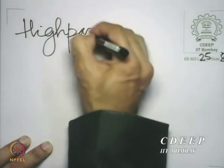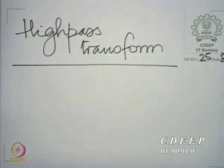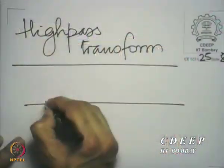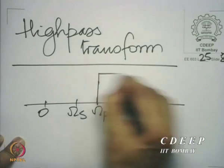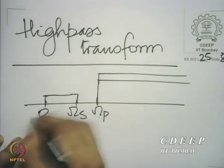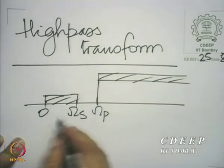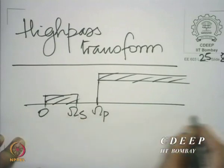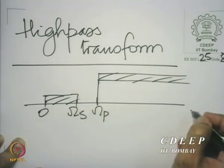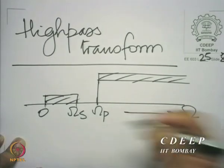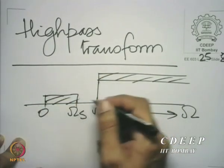High pass transformation. In a high pass filter, what we wish is that as the frequency increases, we have a specification with a stop band and then a pass band. So as we go from 0 towards plus infinity — the same thing is mirrored on the negative side — we expect that we first encounter the stop band and then the pass band.